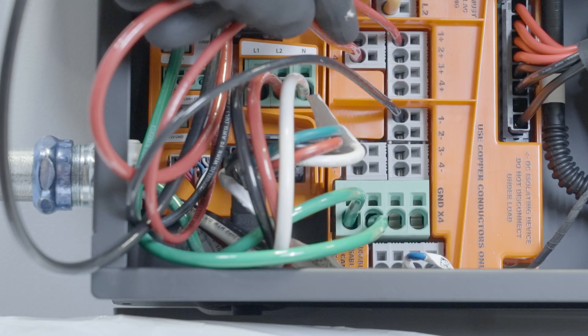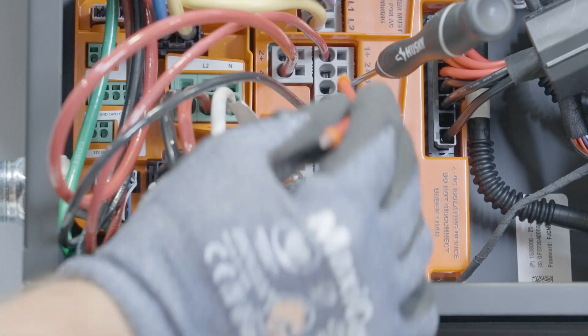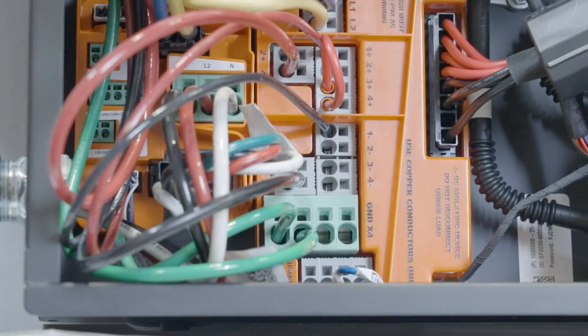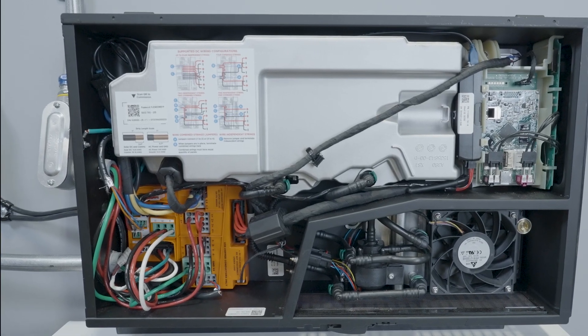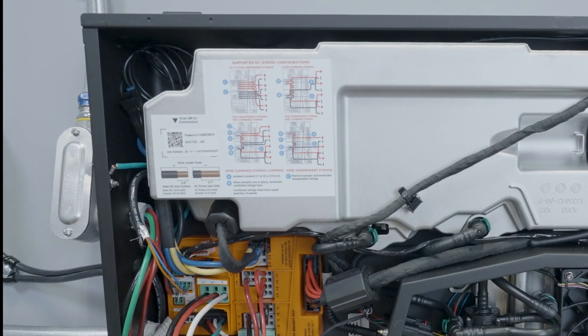Terminate the high amperage DC conductors on the left column of the terminals. Use a jumper to combine the corresponding terminals on the right column. See the Powerwall Plus Quick Guide or the sticker inside of the solar assembly for diagrams on different DC wiring configurations.